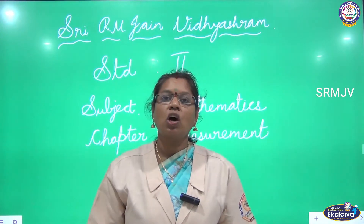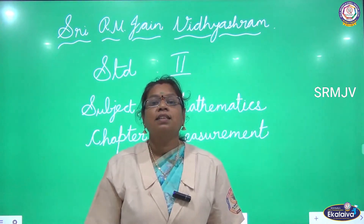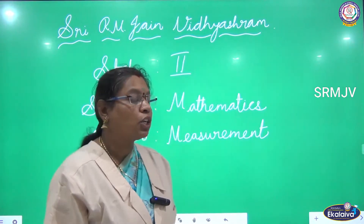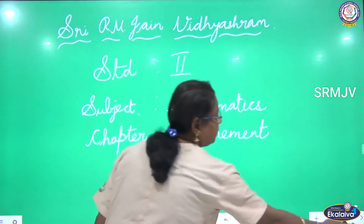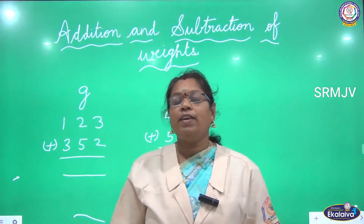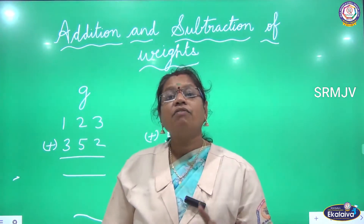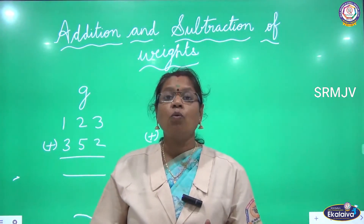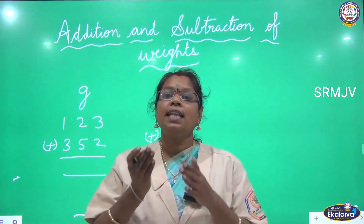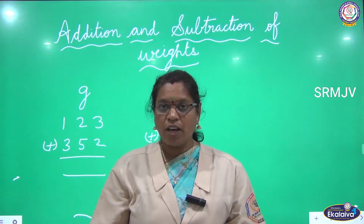Welcome to our online teaching academy Egalaiva, Class 2, subject Mathematics, chapter Measurement. The topic we are going to see is addition and subtraction of weights. In three-digit numbers, we start the addition from the right side — that is from the ones place, then the tens, then the hundreds place.